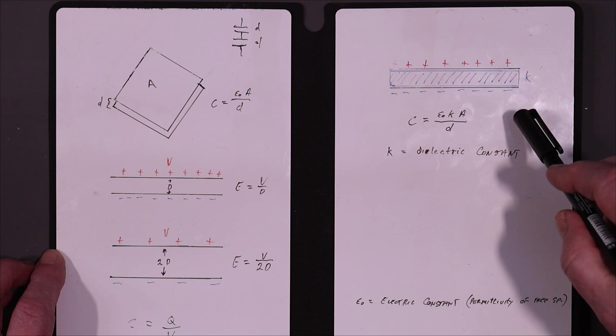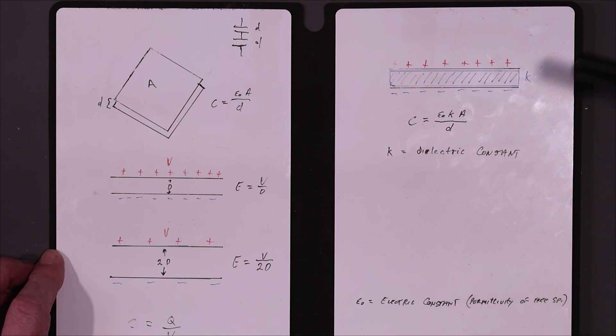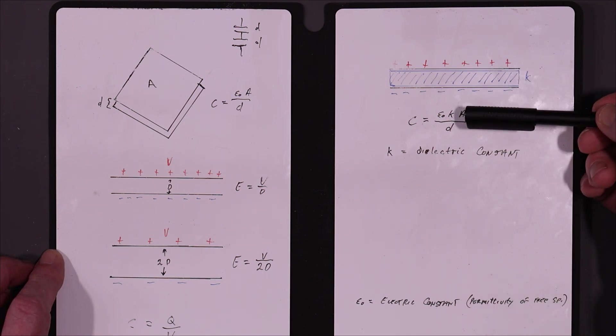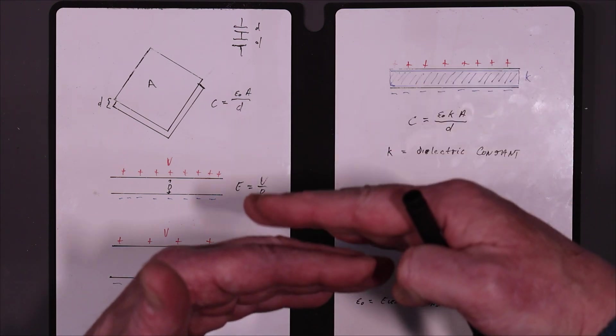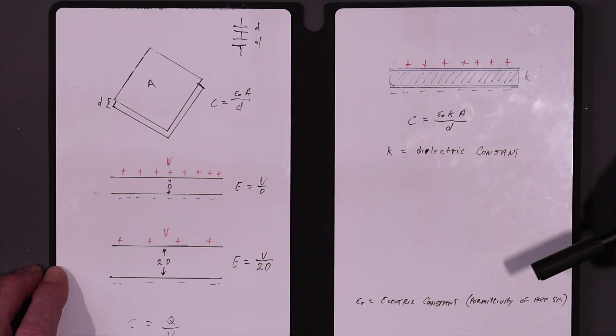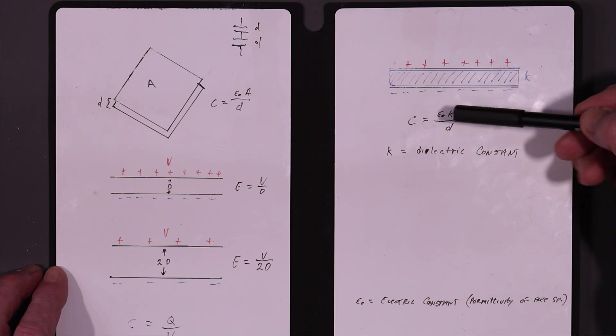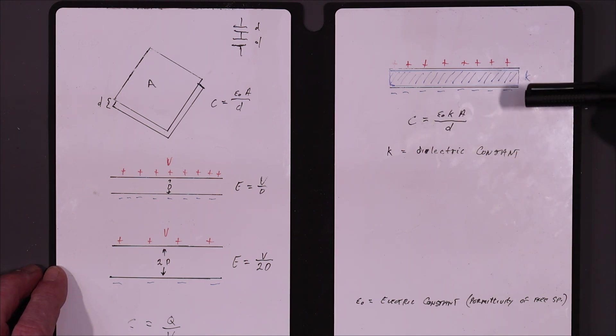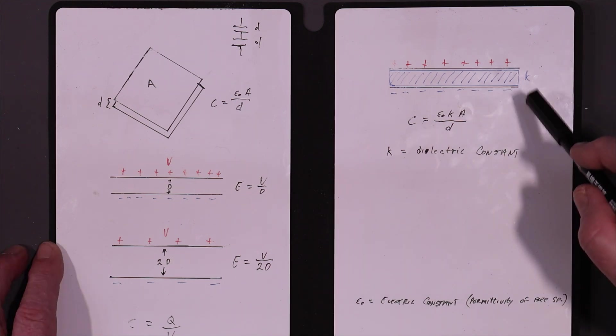In this case here, the dielectric constant K has a similar effect to reducing the distance between the plates. If we put a dielectric in there with a dielectric constant, let's say 4, the capacitance goes up because you have weakened the electric field by a factor of 4. That means you can now cram on 4 times as much charge onto it to get to the same voltage.